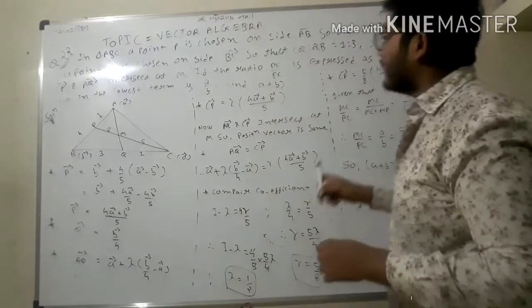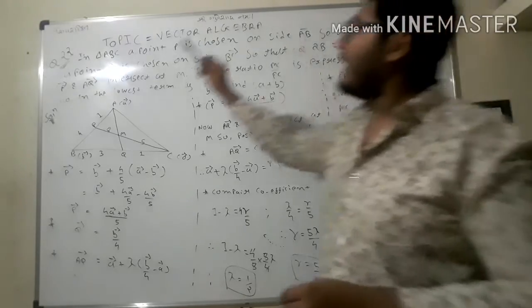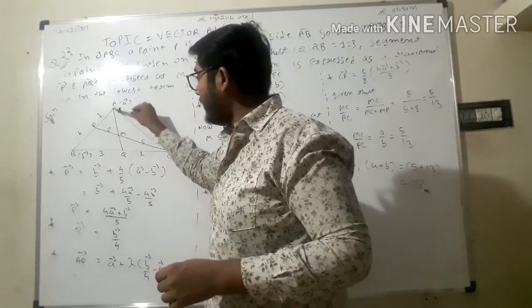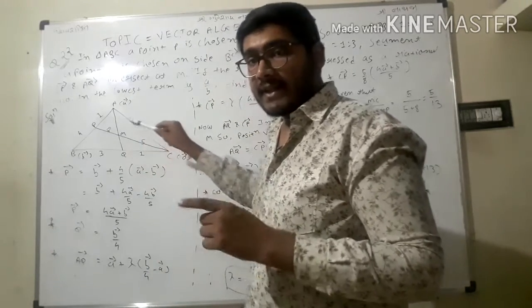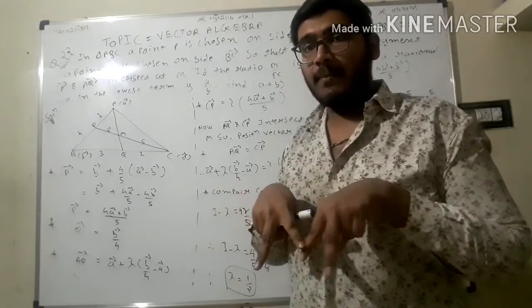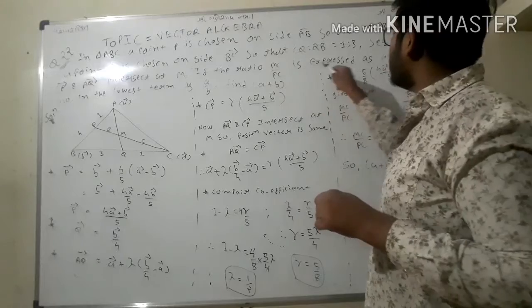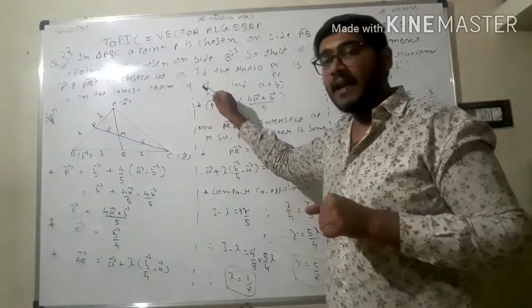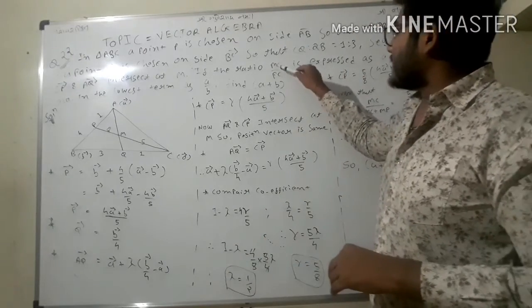Segments CP and AQ intersect at a point M. Now if the ratio MC upon PC is expressed as a rational number in the lowest terms as a upon b, then find a plus b.